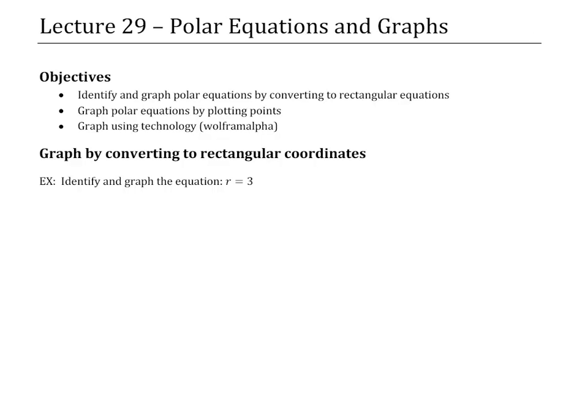In lecture 29 we are going to take our new coordinate system called the polar coordinate system and look at graphs of equations given in terms of r and theta. We are going to identify and graph some polar equations by first converting them to rectangular equations, and in cases where that doesn't make sense we will also graph those polar equations by plotting points. We'll also use the free online resource Wolfram Alpha to graph polar coordinates.